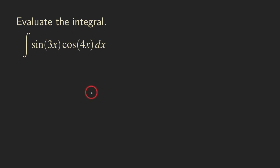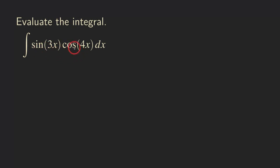Hello everyone, let's look at this integral here. This is a trig integral involving a product of two trig functions. One of them is sine and the other one is cosine, and they have different arguments. So how do we handle this kind of integral?